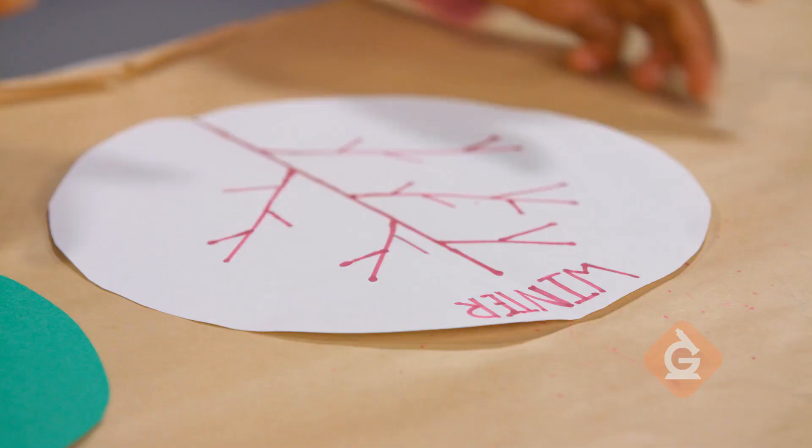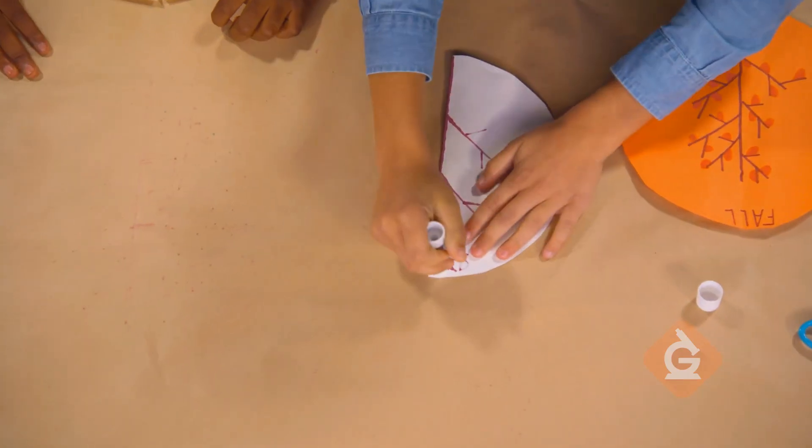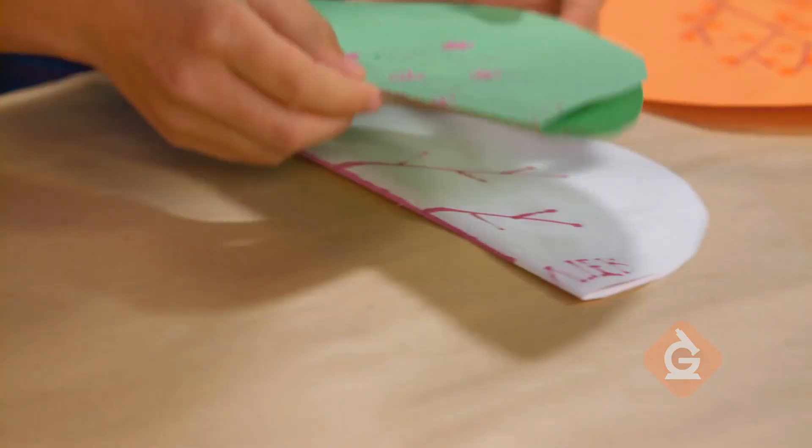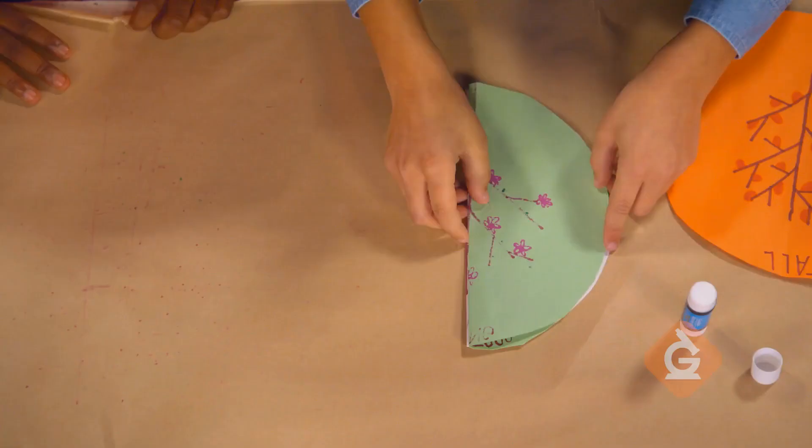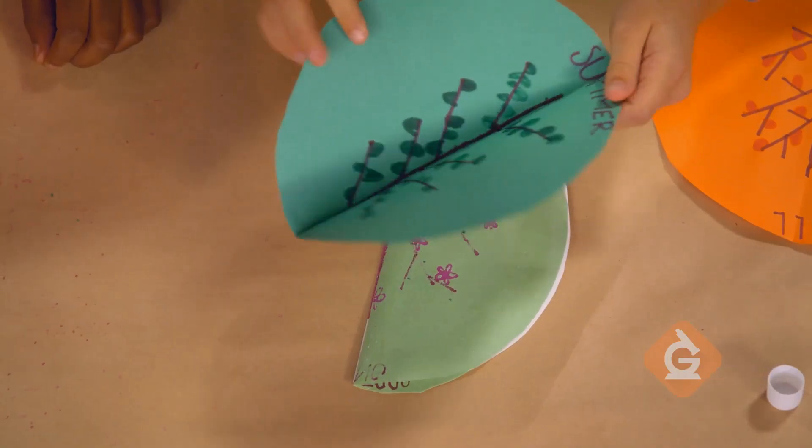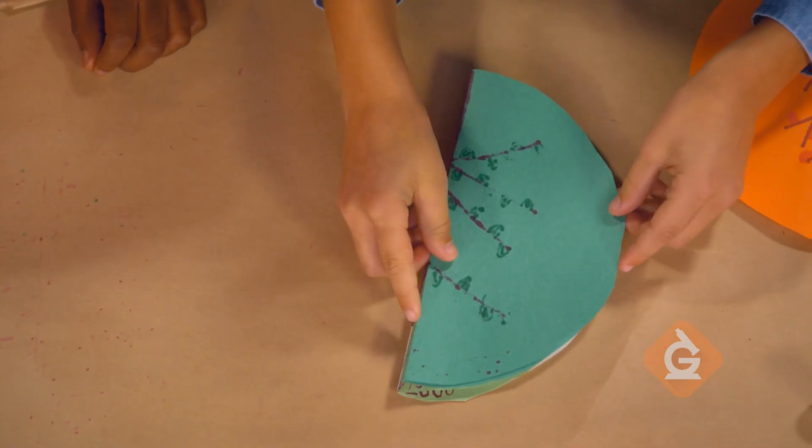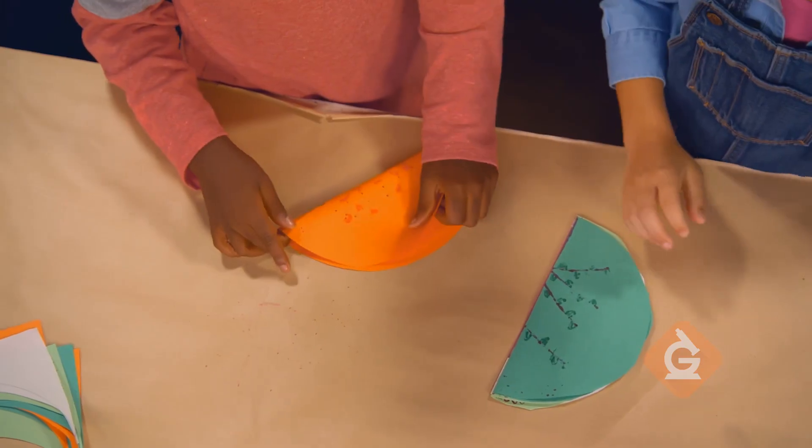Next, fold the white circle in half and glue it to the half of the light green circle. Then, fold the dark green circle in half and glue it on top of the light green one. Then, repeat with the orange.